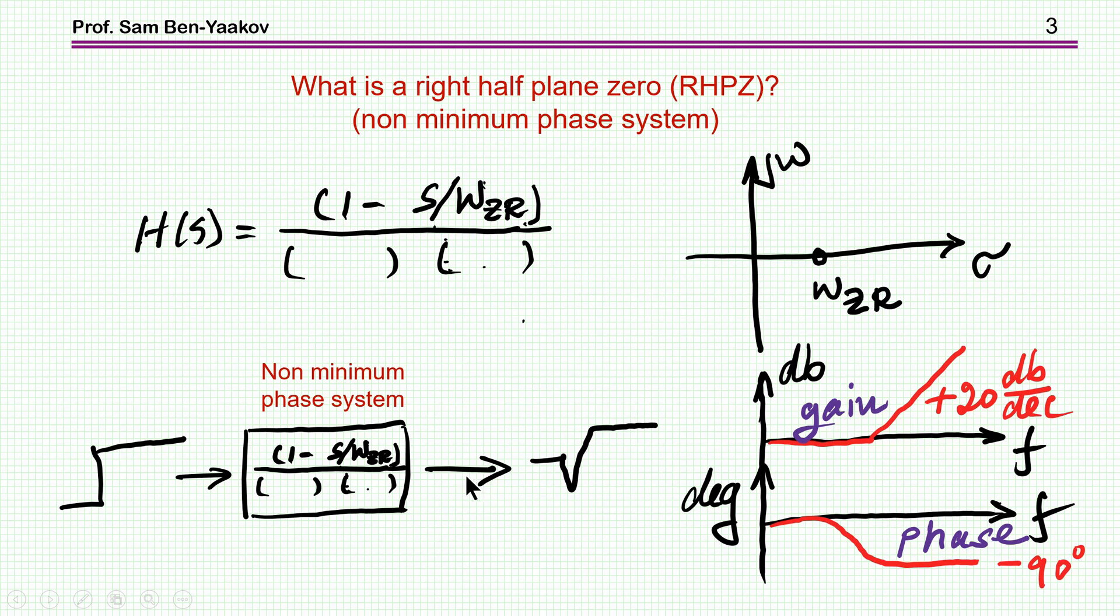In the time domain, in a system that will have such a right half plane zero, you may see this phenomena. When you subject the system to a positive step, rather than going up to the new level, it will go first down and then to the level.